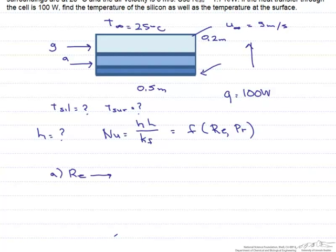And the film temperature is an average between the surrounding temperature, which is 25 degrees C, and the surface temperature. And because we don't know the surface temperature, we have to guess. What I guessed was a film temperature of 320 Kelvin, and as you'll see in part two of this screencast, that's very close.